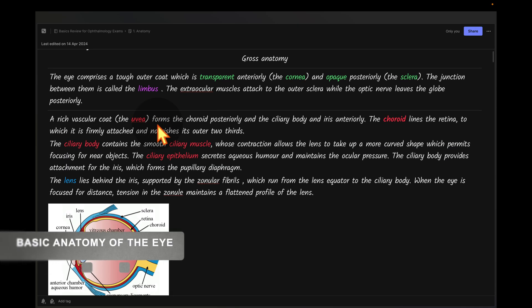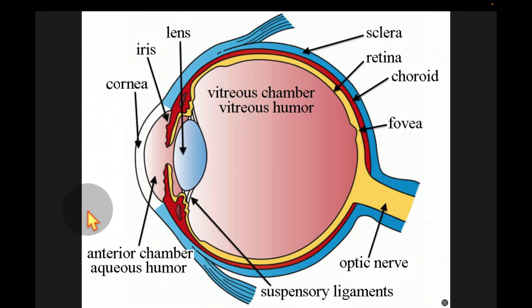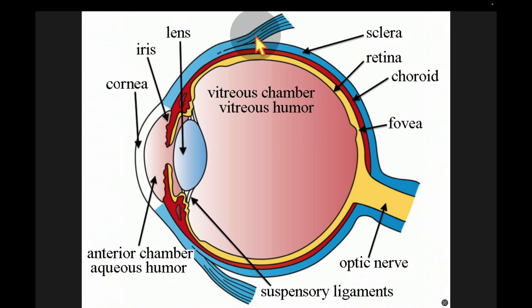The eye comprises a tough outer wall that is transparent anteriorly — that part is called the cornea — and opaque posteriorly, which is called the sclera. The junction between them is called the limbus. The extraocular muscles attach to the sclera, while the optic nerve leaves the globe posteriorly.